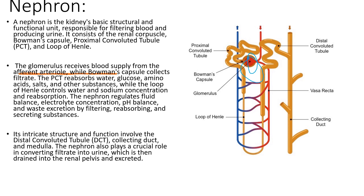The proximal convoluted tubule is a highly coiled tubular structure where the reabsorption of water, glucose, amino acids, salts, and other important substances occurs. It plays a crucial role in reabsorbing valuable components back into the bloodstream.